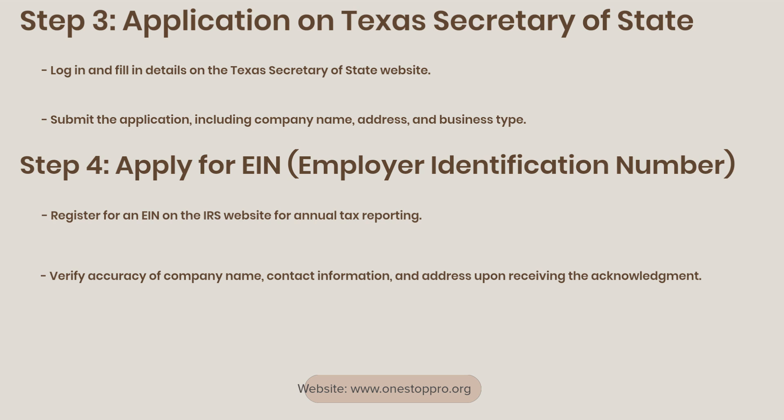Step 4: Apply for an EIN, employer identification number. Register for an EIN on the IRS website for annual tax reporting. Verify the accuracy of company name, contact information, and address upon receiving the acknowledgement.